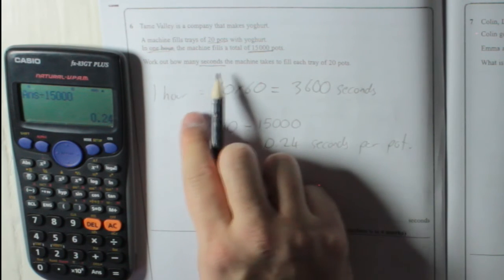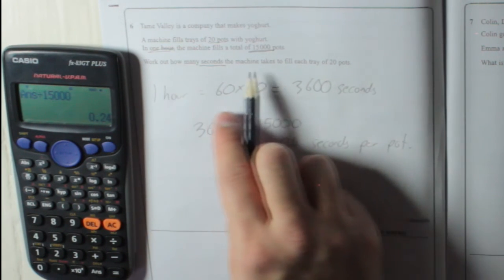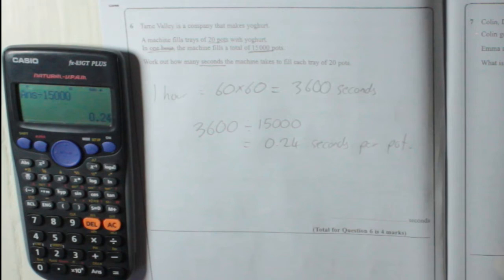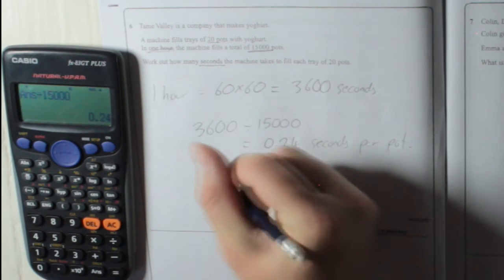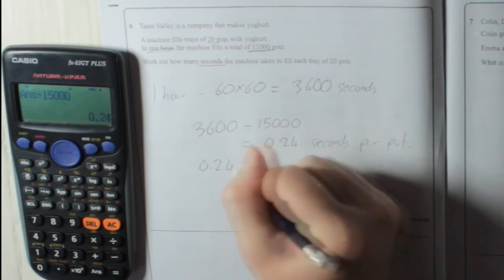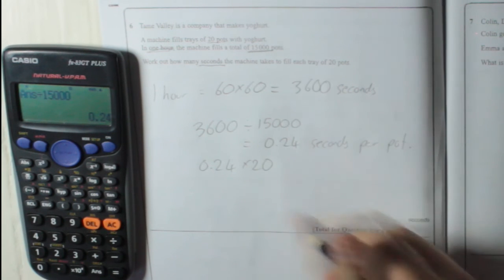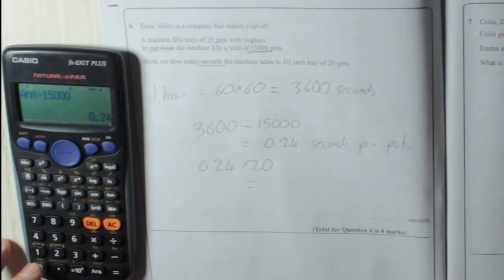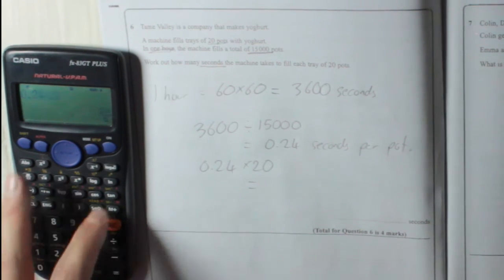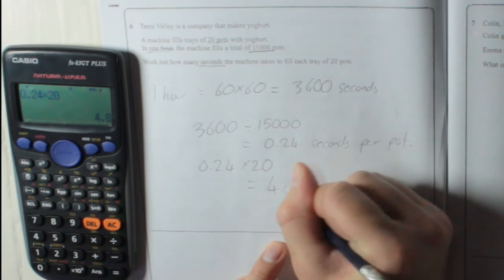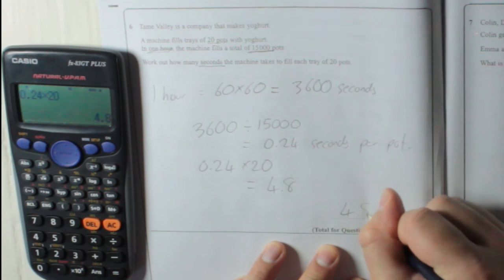We need to work out how many seconds the machine takes to fill each tray of 20 pots. So we multiply our answer by 20 to get how long it takes: 0.24 times 20 equals 4.8. So it takes 4.8 seconds.